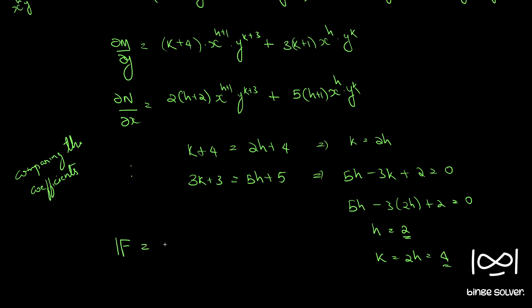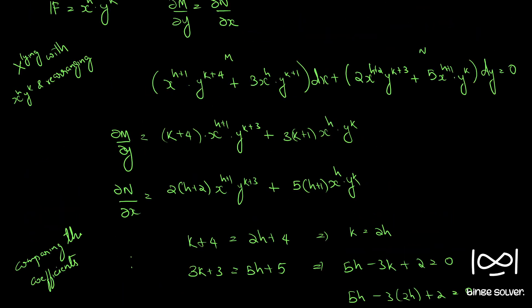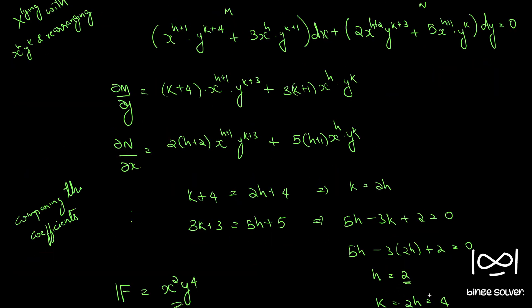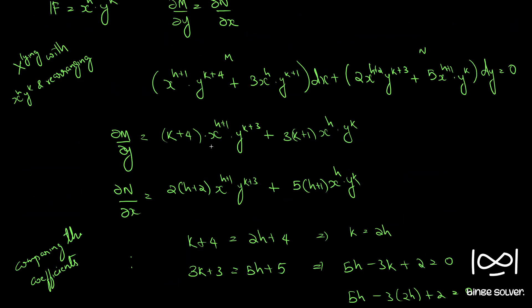So we got our integrating factor: x raise to h is x squared, and y raise to k is y raise to 4. So the integrating factor is x squared into y raise to 4. Now we will apply the values h equal to 2 and k equal to 4 into the equation so that we get our exact equation, which we will use to find the solution. Let me copy this to a new page.